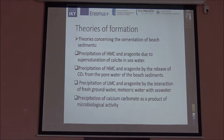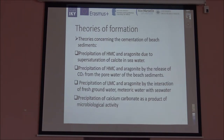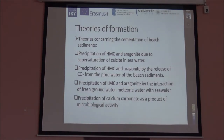There are four most common theories about the formation of beachrock. The first is the precipitation of high-magnesium calcite due to supersaturation of calcite in seawater. The second is the precipitation of high-magnesium calcite due to degassing of carbon dioxide from the pore water of beach sediment, which helps precipitation to be faster. Also, low-magnesium calcite can occur in groundwater and the interaction between meteoric water and seawater. The most common zone is the subaerial zone, and through microbiological activity, we have creation of calcium carbonates through biological processes.